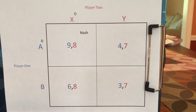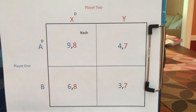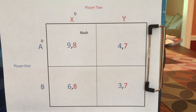In the game in front of you, AX is the only Nash Equilibrium. First let's look. I put a D here and a D there because A and X are both dominant strategies — you should be able to see why. Now let's imagine the two players write down what they want to do, then reveal.